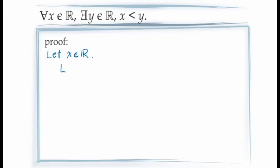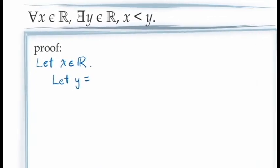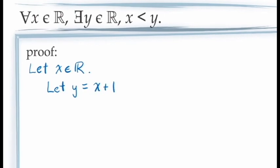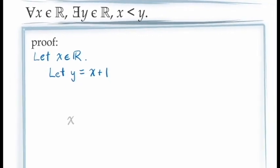We need a statement that says: let y equal something in particular. The question is, what value of y can we assign? We have to think: for this value of x, can we come up with a value of y that is larger than x? One obvious choice might be x plus 1. With this specific value of y, we now need to demonstrate that the statement x < y holds — and again, this is for an arbitrary x but a specific y.